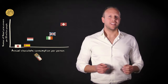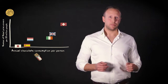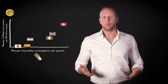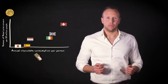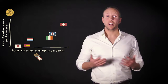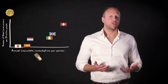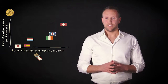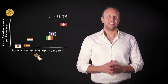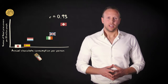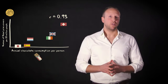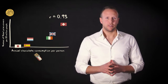Notice that in this scatterplot, chocolate consumption is displayed as the independent variable, and the number of Nobel Prize winners as the dependent variable. The units of analysis are countries, and the correlation is pretty high. In fact, the Pearson correlation coefficient here is 0.93. This suggests that although eating a lot of chocolate might make you fat, it also makes you smart.